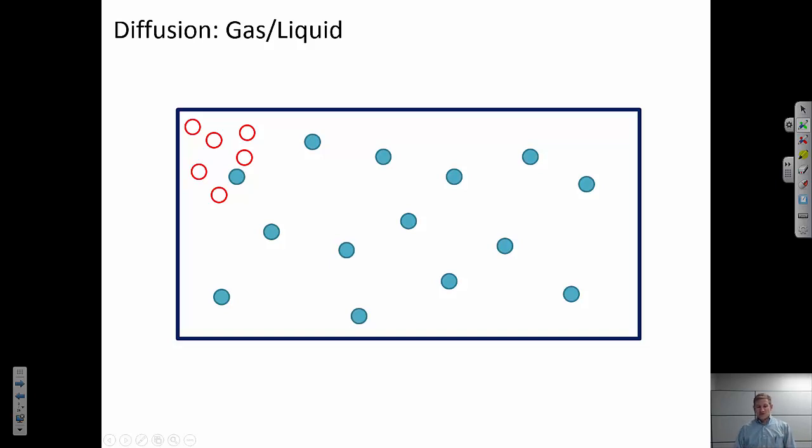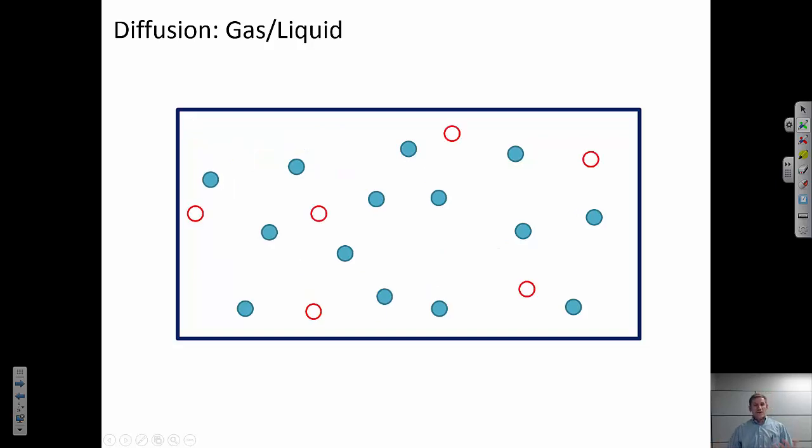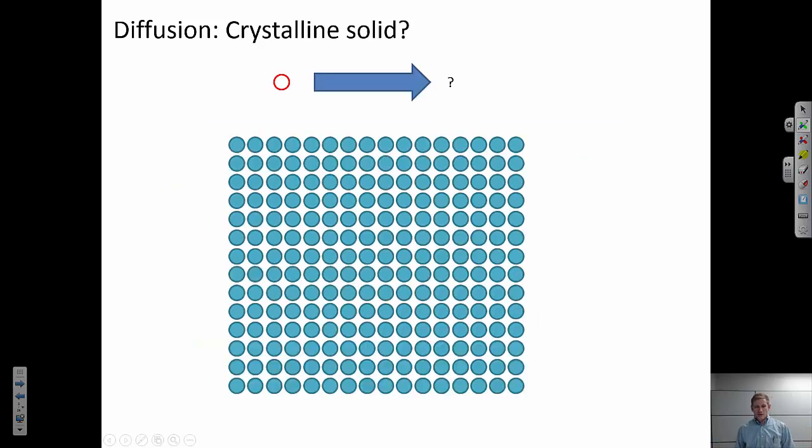And so what happens is if I start off with atoms clustered in some concentration in one particular area, all of these atoms have a velocity that's associated with the temperature. And over time, they're going to spread out throughout this fixed volume. And eventually they're going to be well mixed. So that's how diffusion happens in the gas and liquid.